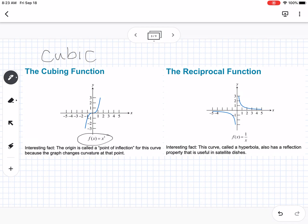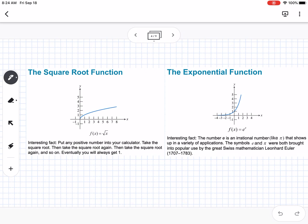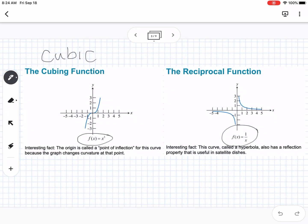The reciprocal function has f(x) = 1/x. This curve is called a hyperbola, and it also has a reflection property useful in satellite dishes. Reciprocal is also called rational - these names can be interchanged.